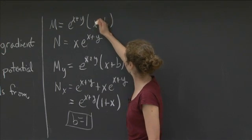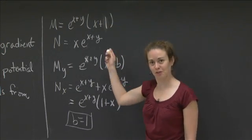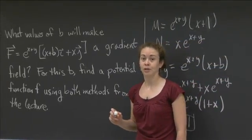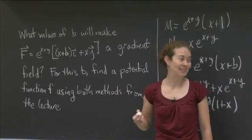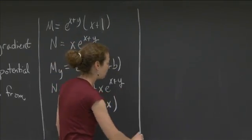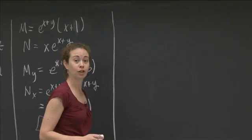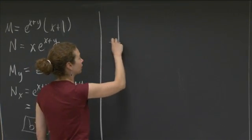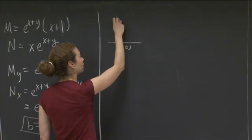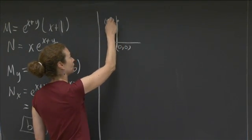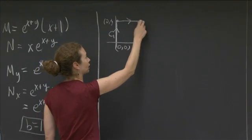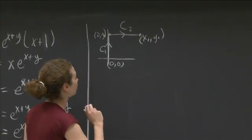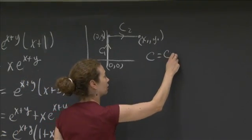To get n sub x to equal m sub y, b has to equal 1. So now what I'm going to do is I'm going to erase that b, put in a 1, so that the rest of my calculations refer to that. So now the second part said, for this b, find a potential function f using both methods from the lecture. So we're going to go through both methods, and hopefully we get the same answer both times. So let me come back here. And I'm going to use the first method is where I'm integrating along a curve from (0, 0) to (x1, y1). So I'm going to do it in the following way. I'm going to let c1 be the curve from (0, 0) up to (0, y1), and then c2 be the curve from (0, y1) to (x1, y1).